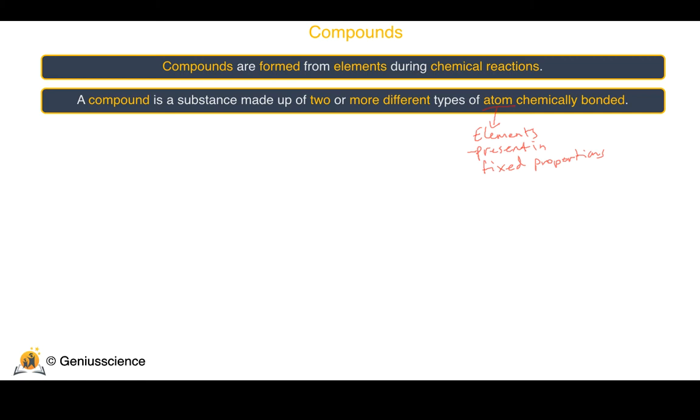Appearing on your screen now are three particle diagrams representing different compounds. On the left hand side of the screen we have the compound iron sulphide. There is one iron atom here and one sulphur atom here. So there is one iron atom for every sulphur atom. A 1 to 1 ratio, a fixed proportion.